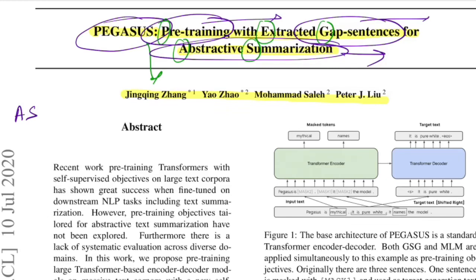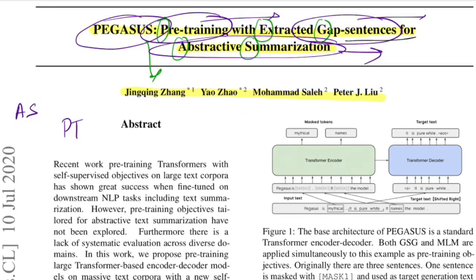The opposite of this is Extractive Summarization, where we train a system that learns what are the important sentences in the input text and simply extracts them — that's why the name Extractive. The second keyword is pre-training: a technique where you train your model on a very large amount of data, such as from Wikipedia or Common Crawl, on a self-supervised objective, which means you won't have any labeled data — you create labels from the raw data you have.